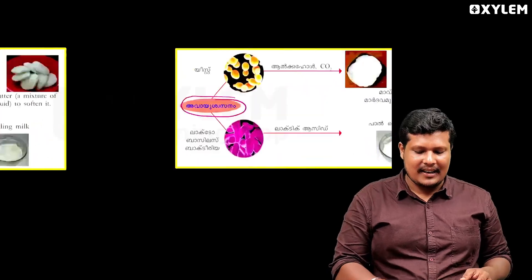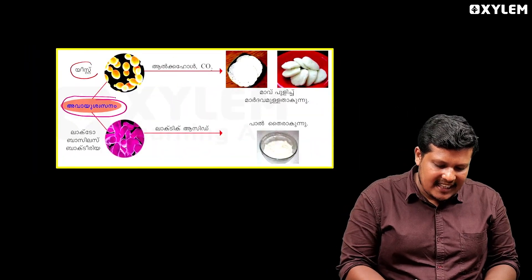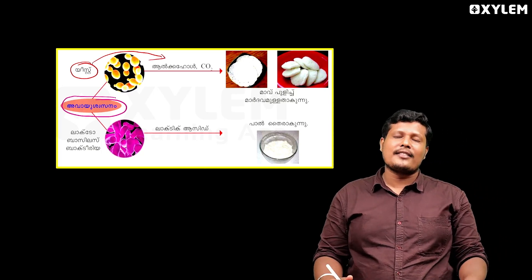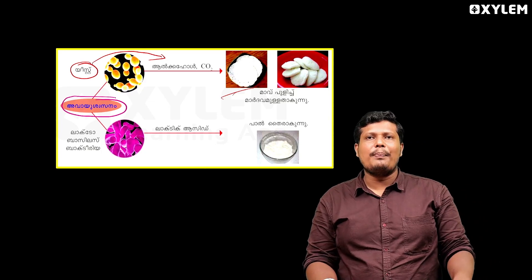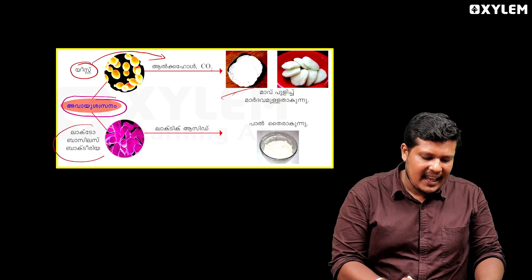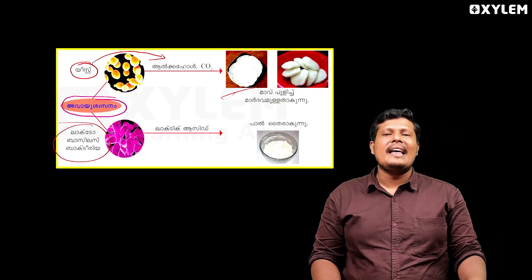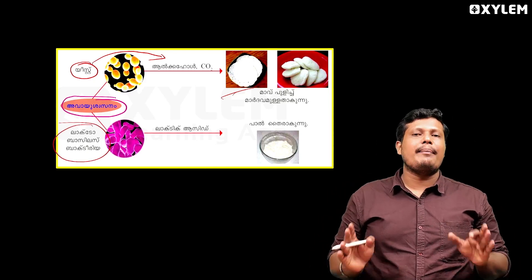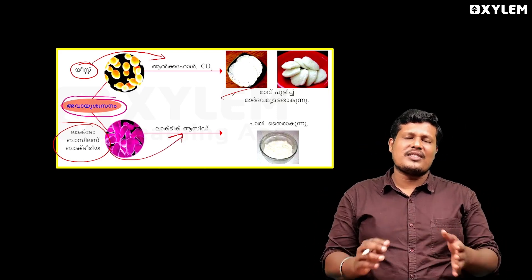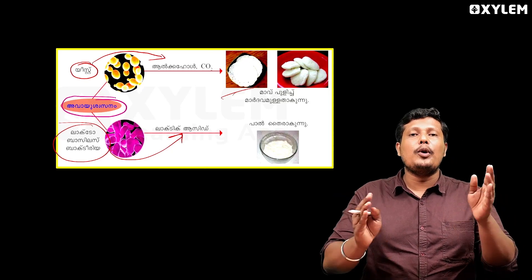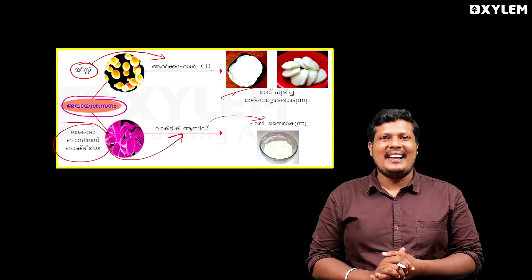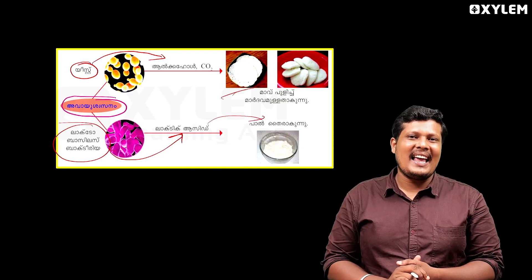So, to summarize: yeast undergoes anaerobic respiration and produces alcohol and carbon dioxide. Lactobacillus bacteria undergo anaerobic respiration and produce lactic acid. Clear? Set? Okay.